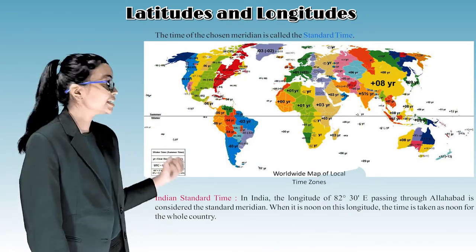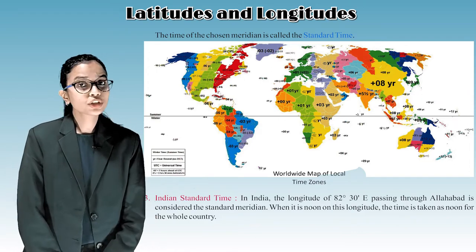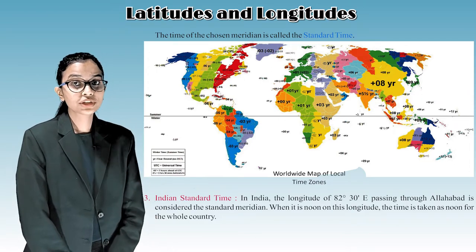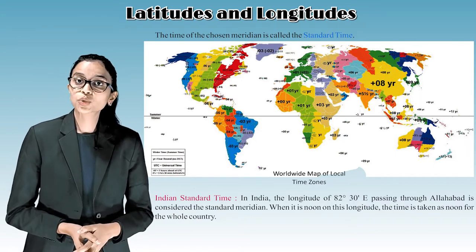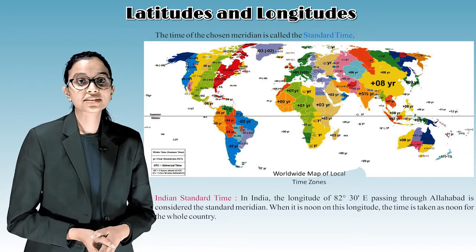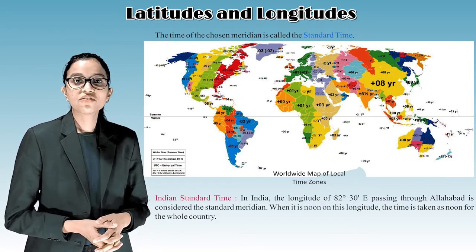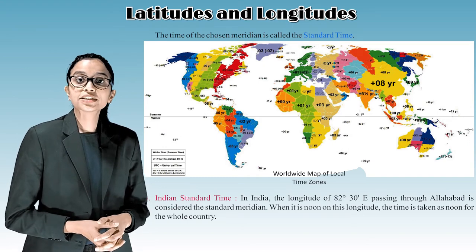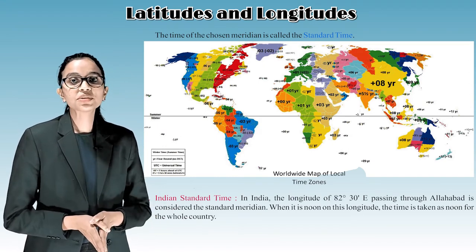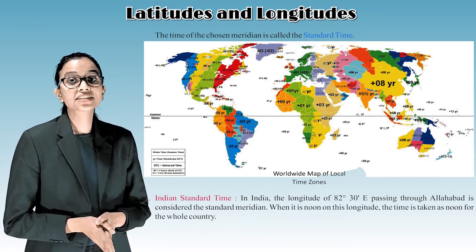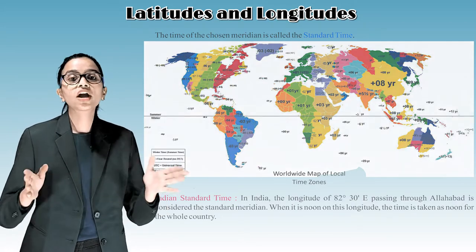Indian Standard Time: In India, the longitude of 82 degrees 30 minutes east, passing through Allahabad, is considered the standard meridian. When it is noon on this longitude, the time is taken as noon for the whole country.